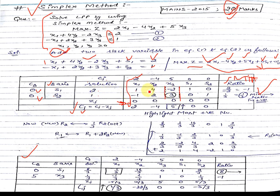To calculate the minimum ratio, divide the solution column by the corresponding key column entries. Dividing 2 by -2 gives -1, and dividing 1 by 3 gives 1/3. We take the smallest positive value, which is 1/3. So s2's row is the outgoing vector and x3 is the incoming vector, making 3 the key element.